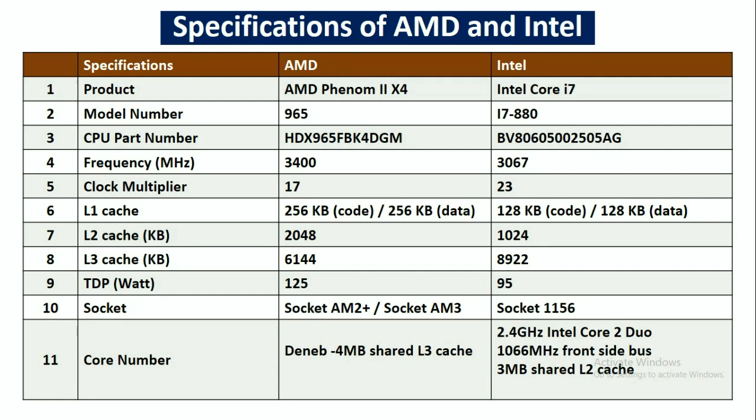The frequency in MHz for AMD processor is 3400, and for Intel it is 3067. The clock multiplier for AMD processor is 17, and for Intel it is 23. The level 1 cache for AMD processor is 256 KB for code memory and 256 KB for data memory, and for Intel it is 128 KB for code and 128 KB for data. The level 2 cache for AMD processor is 2048 KB, and for Intel it is 1024 KB.